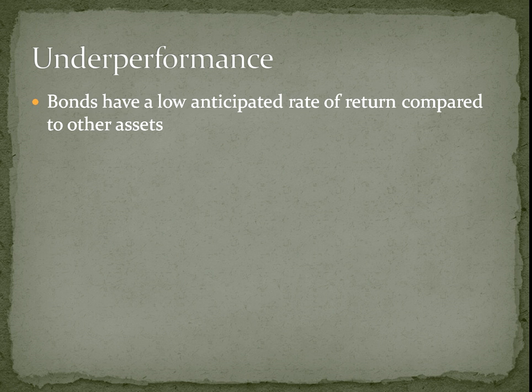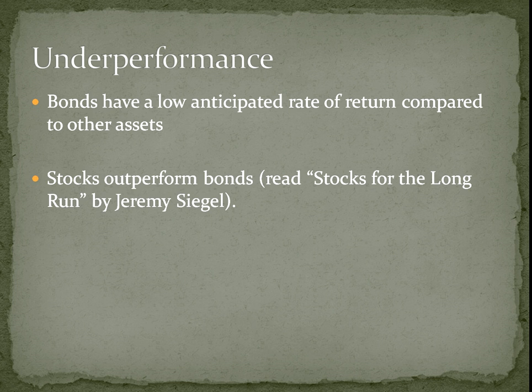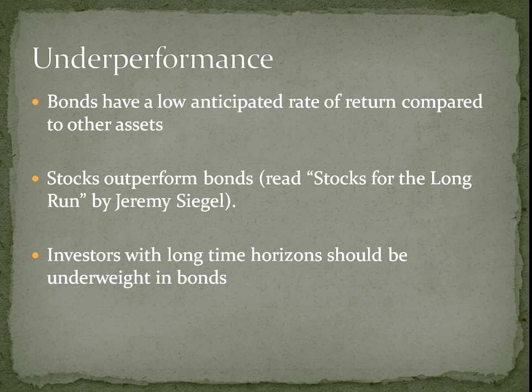Underperformance: bonds have a low anticipated rate of return. You don't expect to be earning 20% a year like Buffett does. If you're buying only bonds, it's very, very difficult — if not impossible — to buy and hold bonds and get 20%. Stocks outperform bonds; if you look at various 10-year periods, as documented in the book 'Stocks for the Long Run', you find that stocks significantly outperform bonds. So if you've got a long time horizon, you should definitely be underweight in bonds and overweight in stocks.